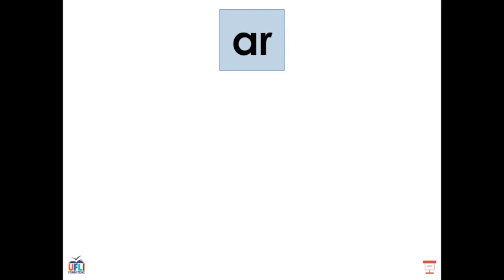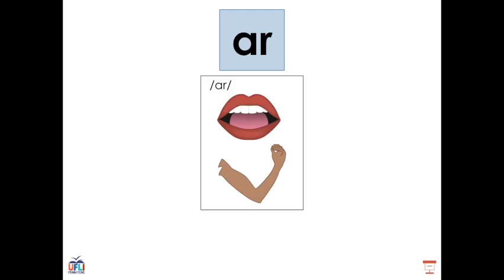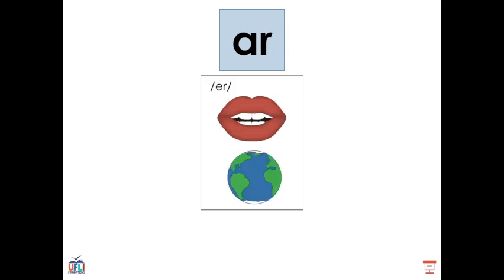In the past we've learned about the R controlled vowel pattern AR and we learned that it says R as in arm. A-R arm are. But today we're going to be looking at situations in which that same AR spelling pattern can say er as in earth.